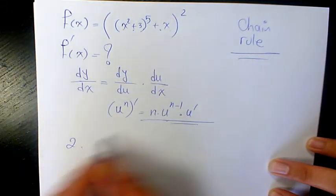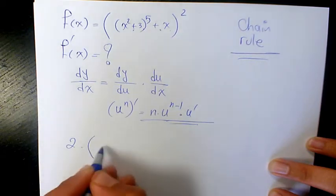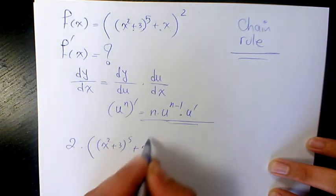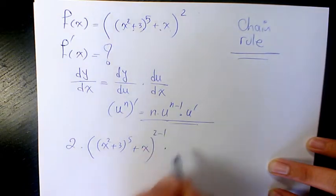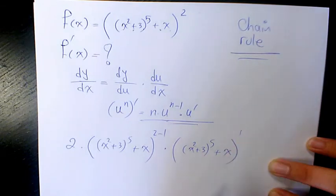So it's going to be 2 times, if you follow this, ((x² + 3)⁵ + x) to the power of 2 minus 1, times the derivative of (x² + 3)⁵ + x.